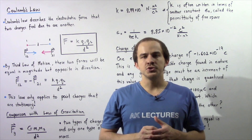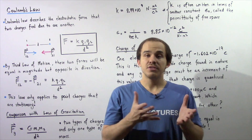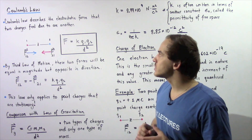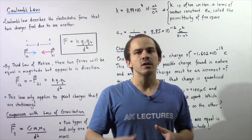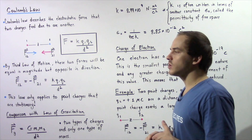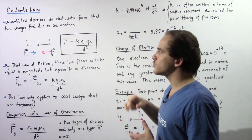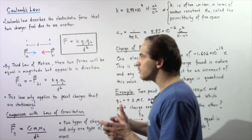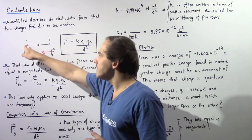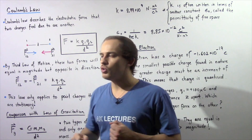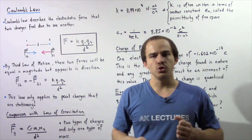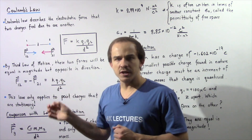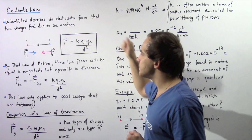If we make the assumption that these two charges are point charges and that these two point charges are stationary, then Coulomb's law describes the electrostatic force that two charges feel as a result of one another. Suppose we have two point charges that are stationary and separated by a distance d. Point charge 1 has a charge q1 and point charge 2 has a charge q2. The force that each one of these stationary point charges feels as a result of the other charge is given by Coulomb's law equation.